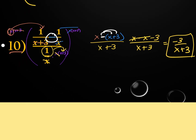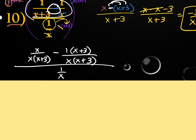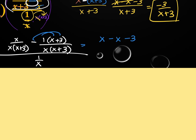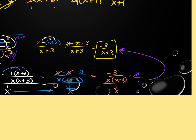Alternatively with method two: in the numerator find LCD x(x+3), giving x over x(x+3) minus (x+3) over x(x+3). Combined numerator: (x - x - 3) over x(x+3) = -3 over x(x+3). Denominator is 1/x. Keep-change-flip: multiply -3/x(x+3) times x/1. The x's cancel, giving the same answer: -3 over (x+3).